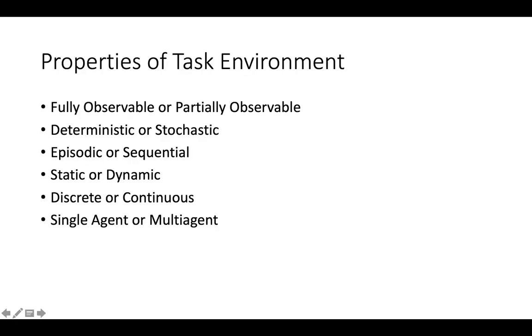The task environment for an AI agent can be broadly of six types. It can be fully observable or partially observable, which means that either you know the whole domain that encapsulates the environment or you don't.